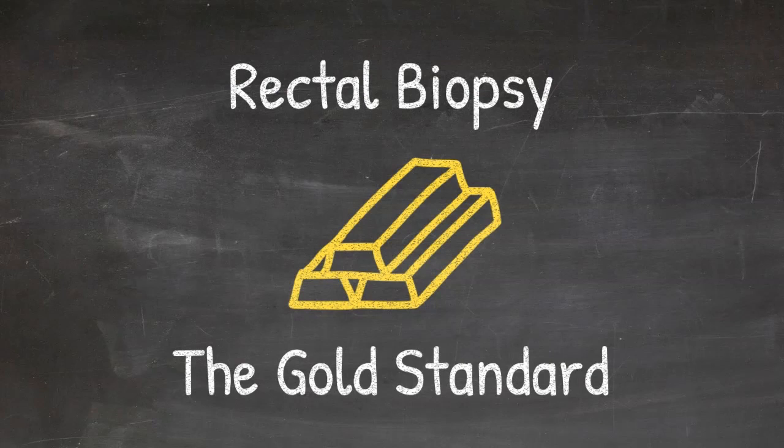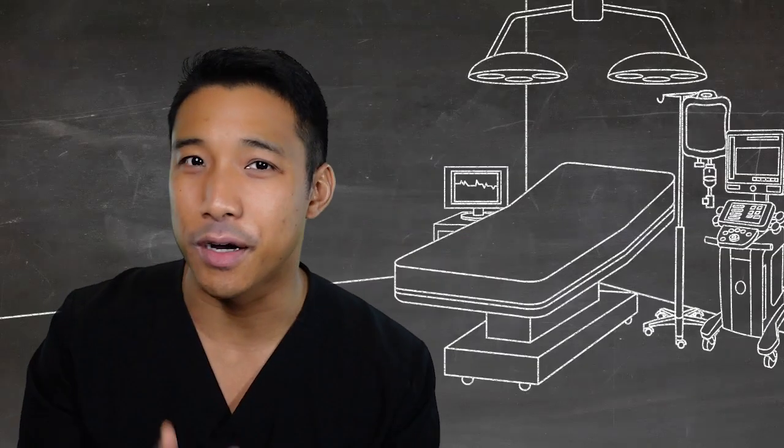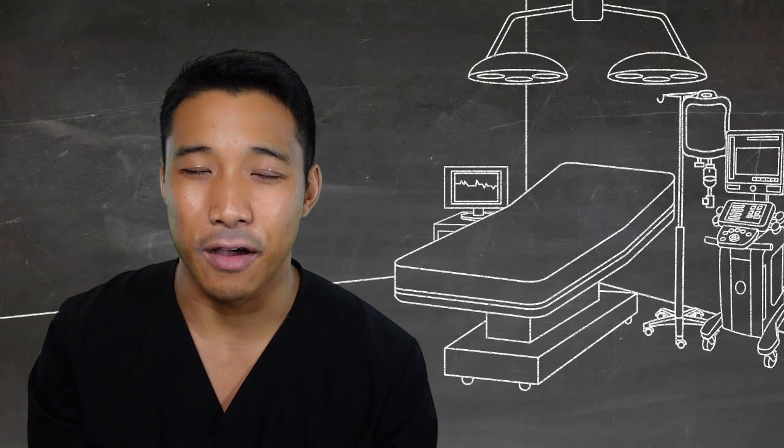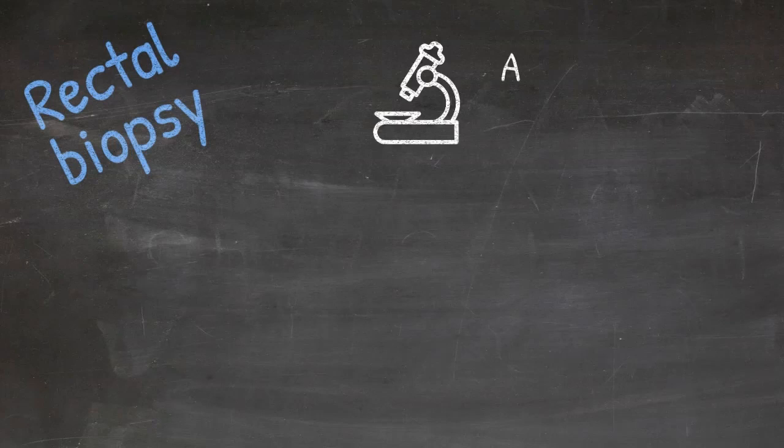The second part of a diagnostic workup for Hirschsprung's disease, and most important, is the rectal biopsy. It is the true definitive diagnosis.